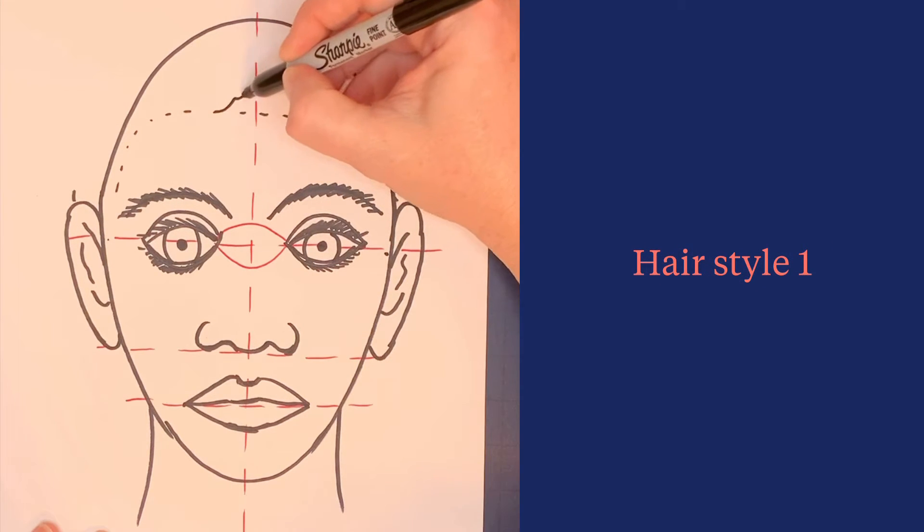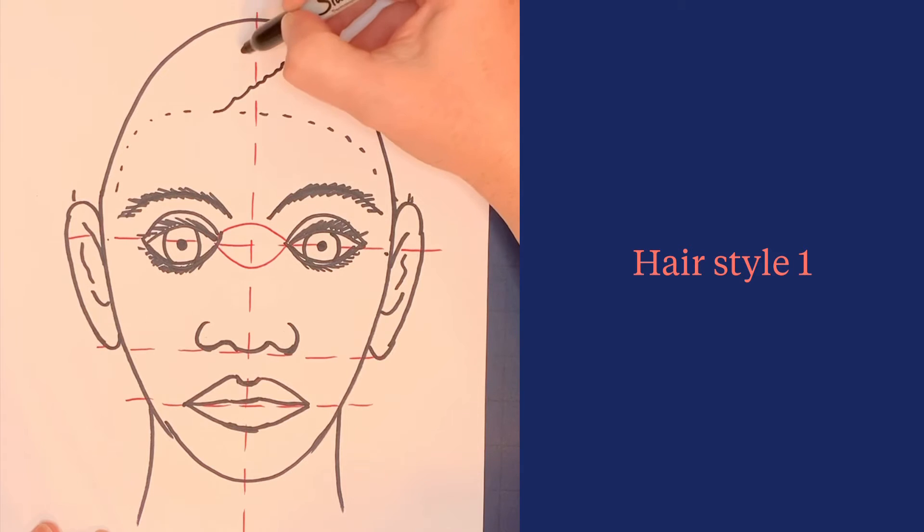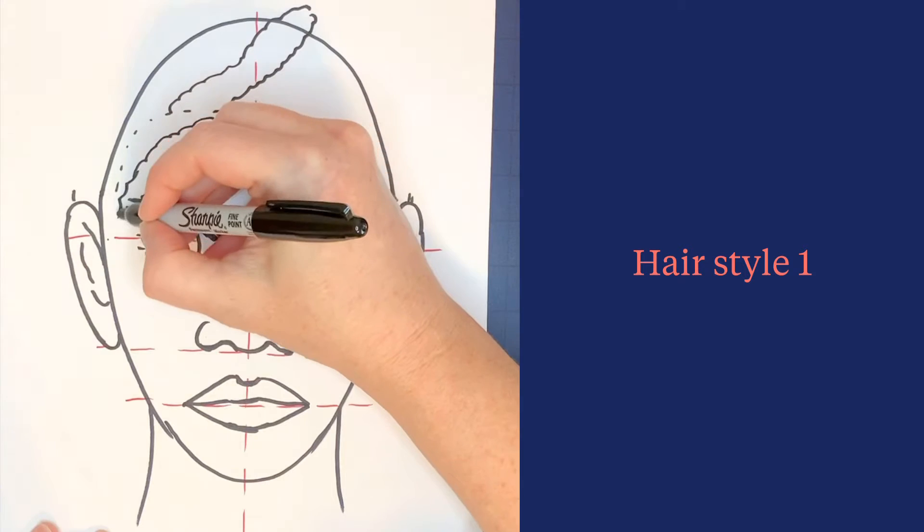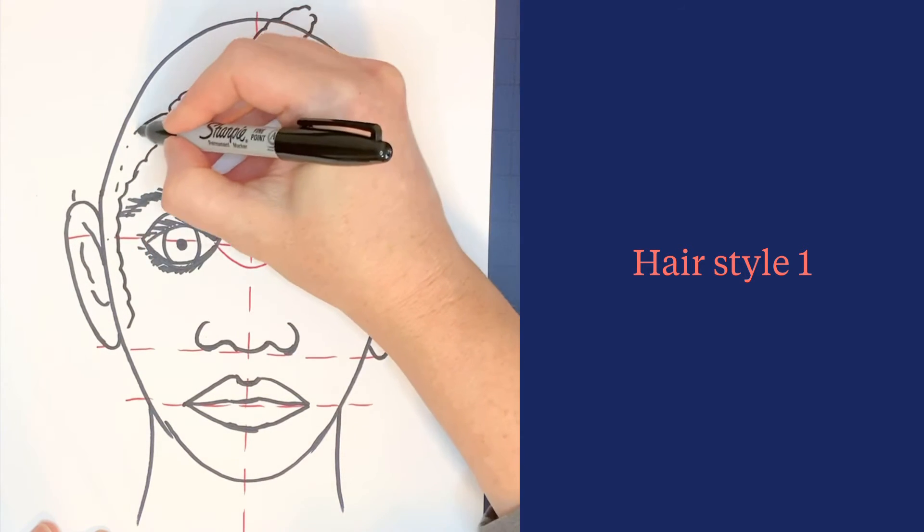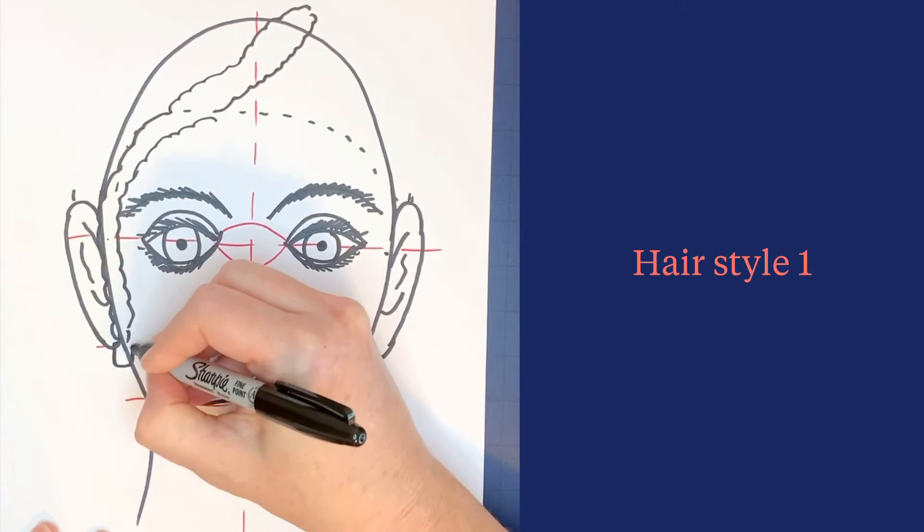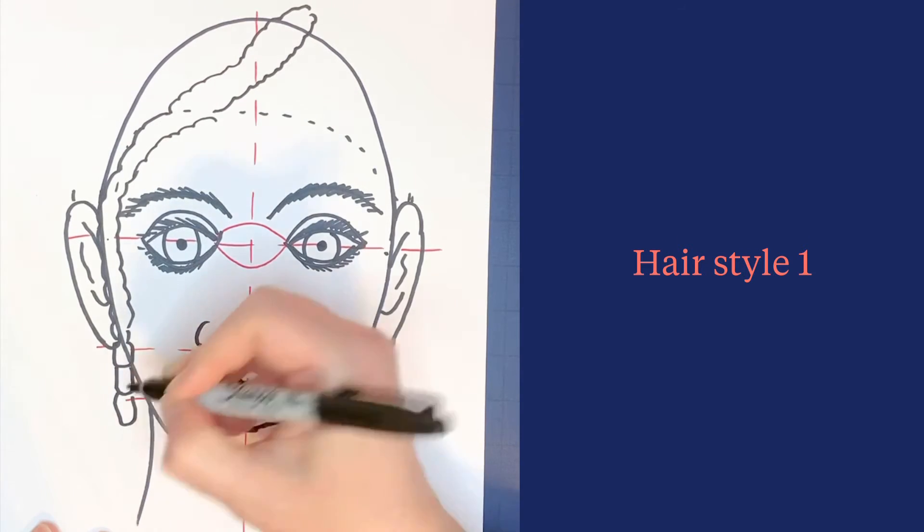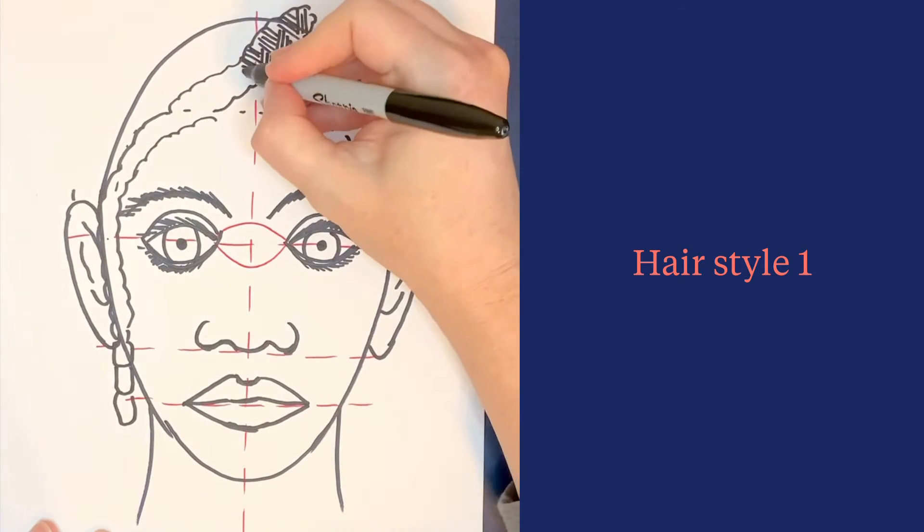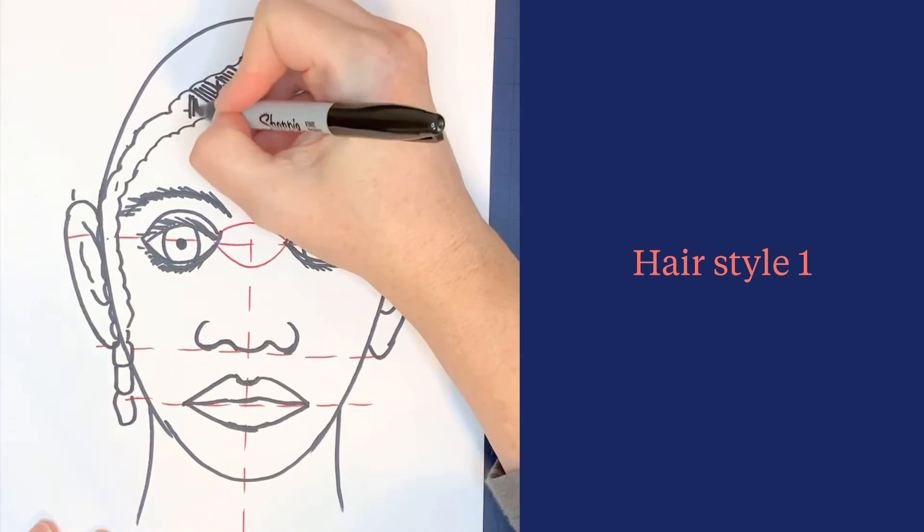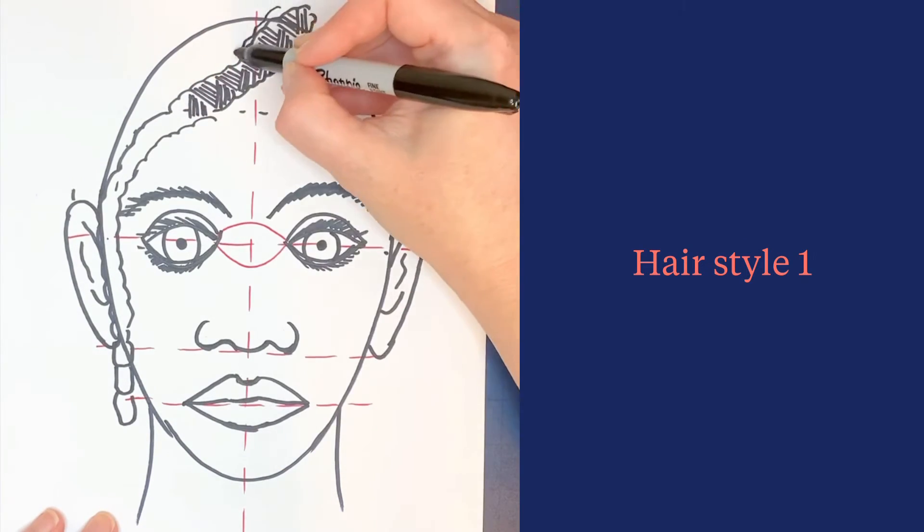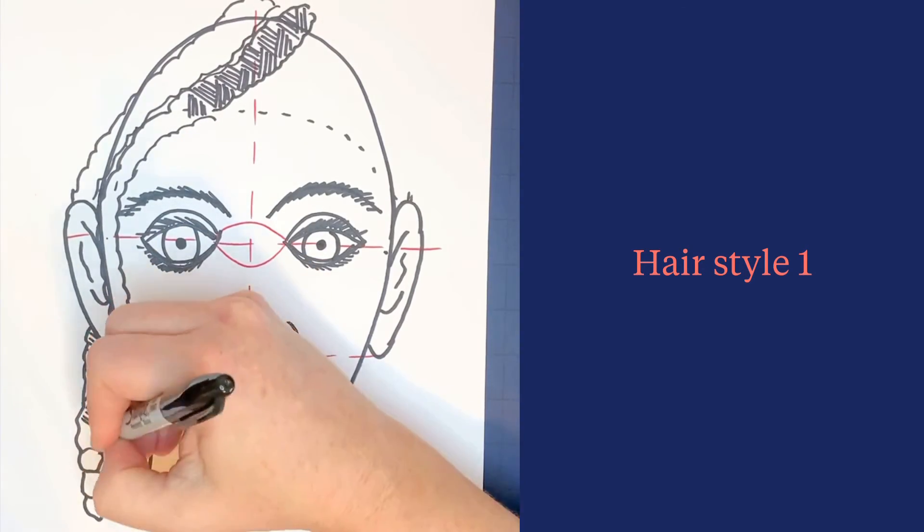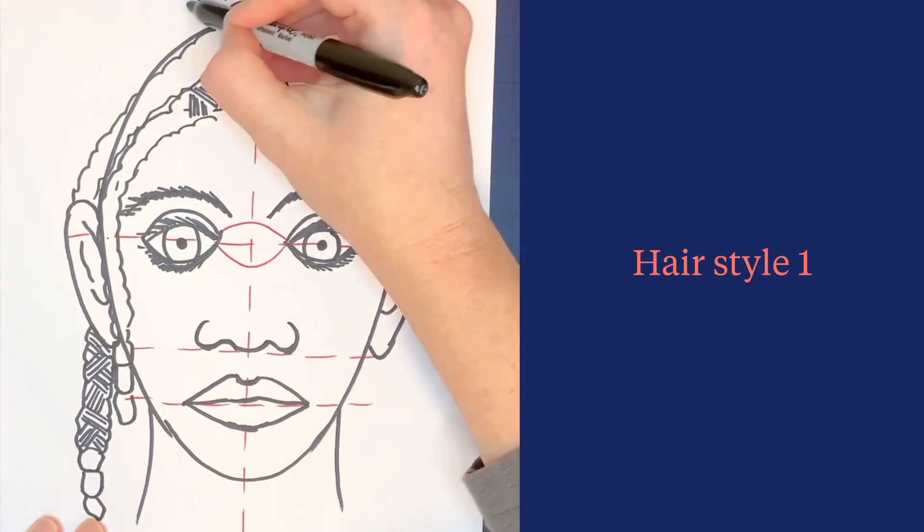The first hairstyle is braids. Make a cloud shape but stretch it out. These braids come across the forehead and come down. Add rounded squares for beads, or leave them off. Put in diagonal lines, then reverse the direction - this makes the hair appear braided. Continue that all the way down the braid and add more.